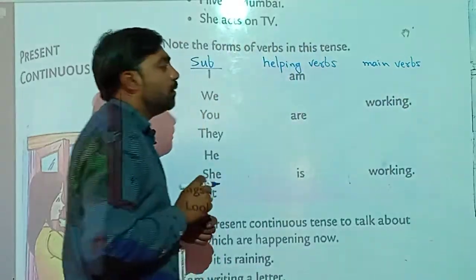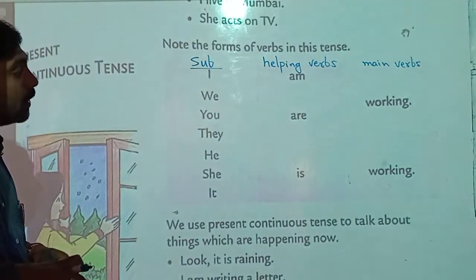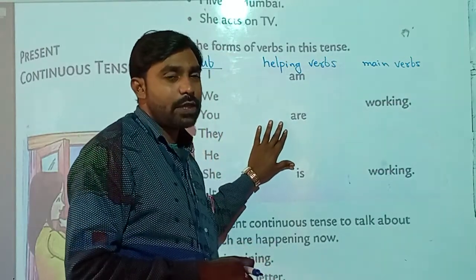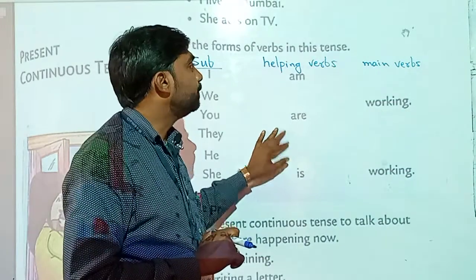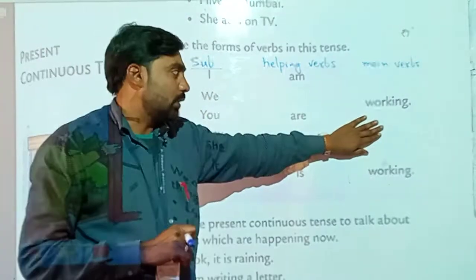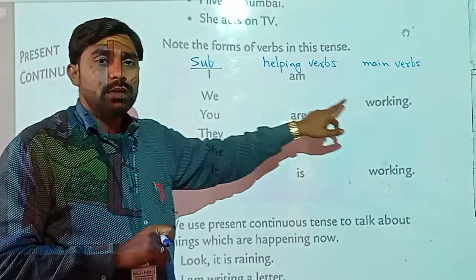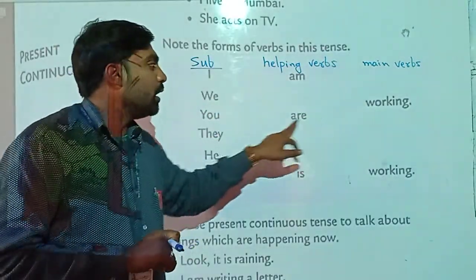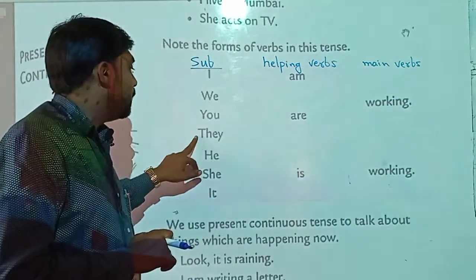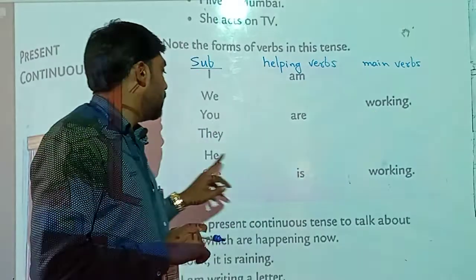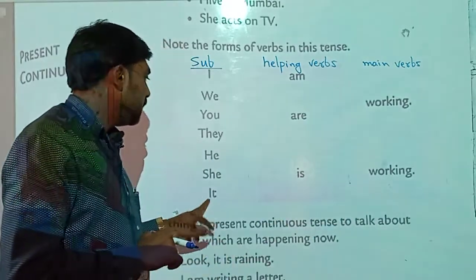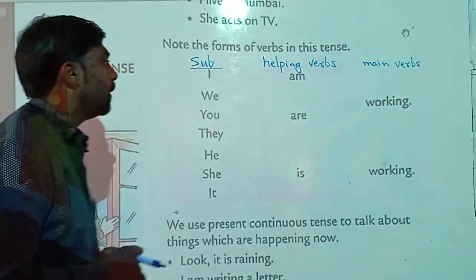We have already learned about different verb forms. These are the 'to be' verbs — in present tense: am, is, are; and in past tense: was, were. Now see carefully: I am working, we are working, you are working, they are working, he is working, she is working, and it is working.